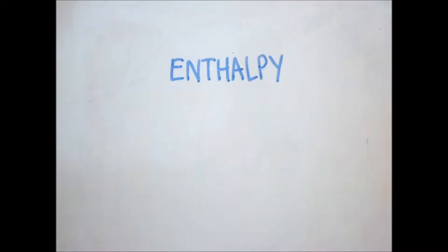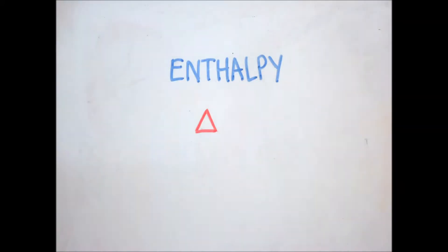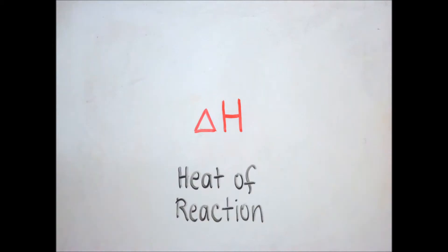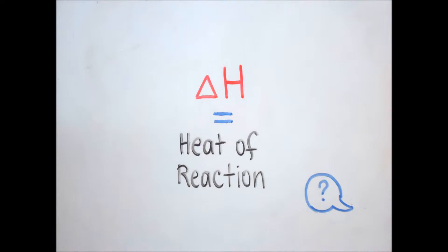This is where enthalpy comes to play. The change in enthalpy of a reaction, written as ΔH, is the amount of heat absorbed per mole of a substance at constant pressure. It's often interchanged with the term heat of reaction, which by definition is the change in enthalpy of a chemical reaction. Sounds exactly the same? Not quite.